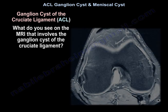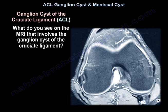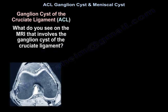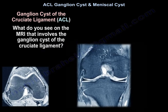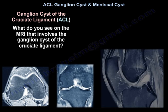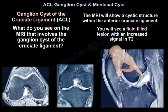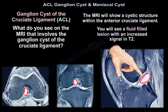What do you see on MRI for a ganglion cyst involving the cruciate ligament? The MRI will show a cystic structure within the anterior cruciate ligament — a fluid-filled lesion with an increased signal on T2.